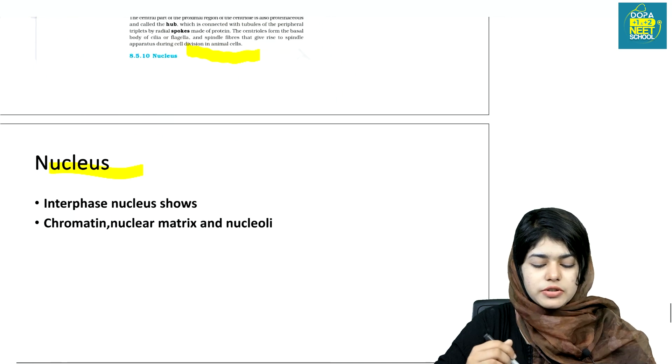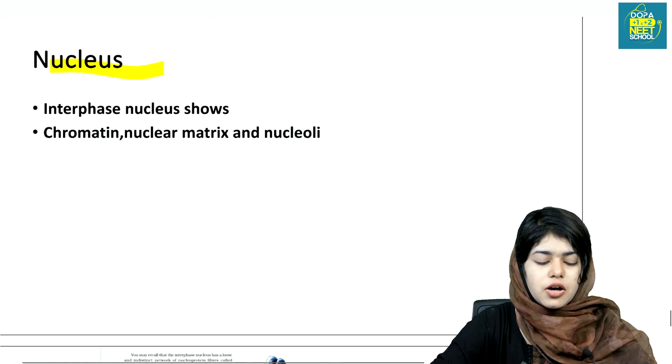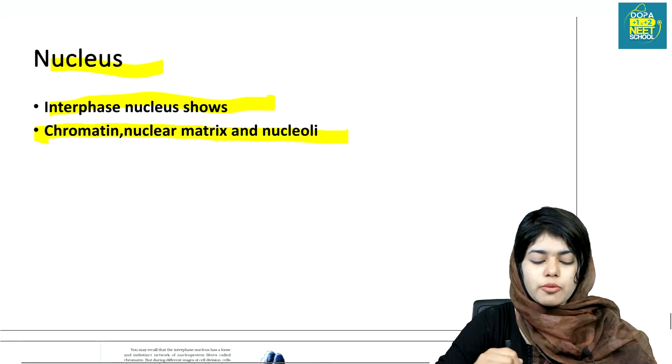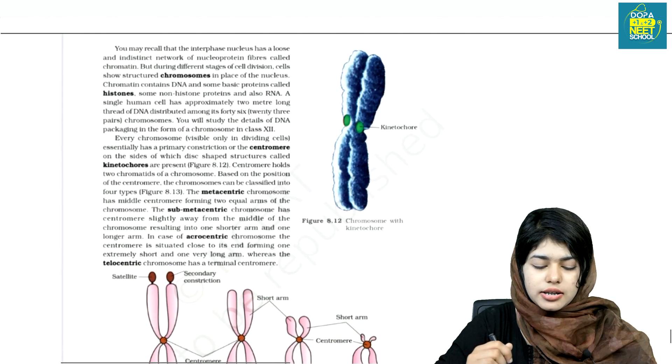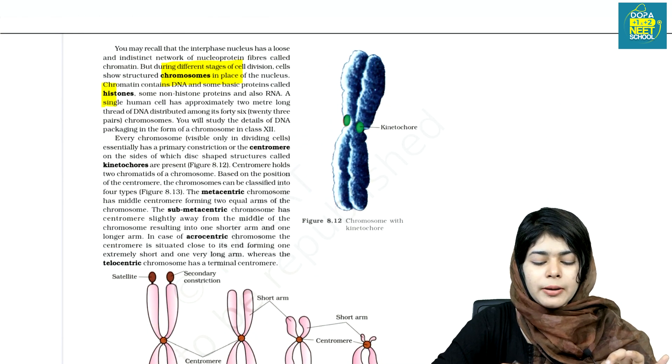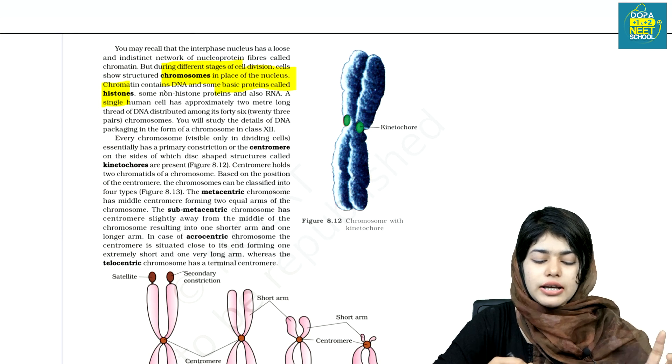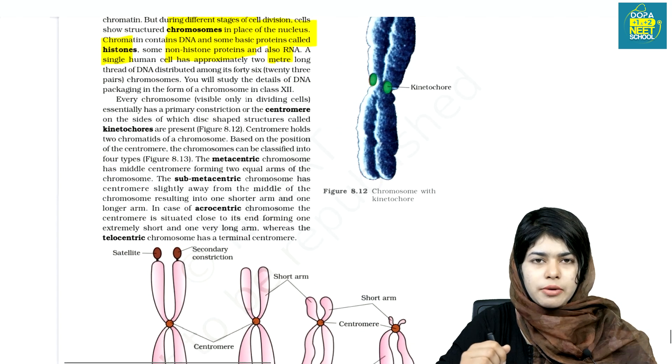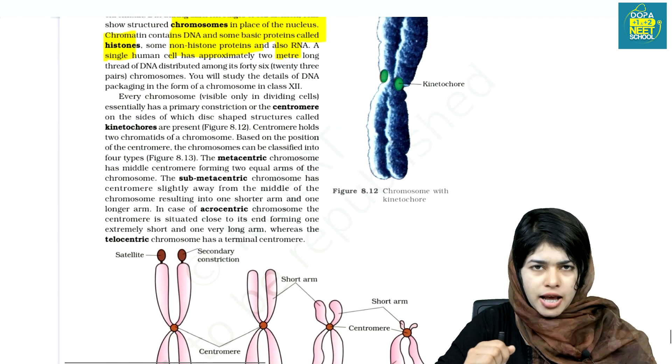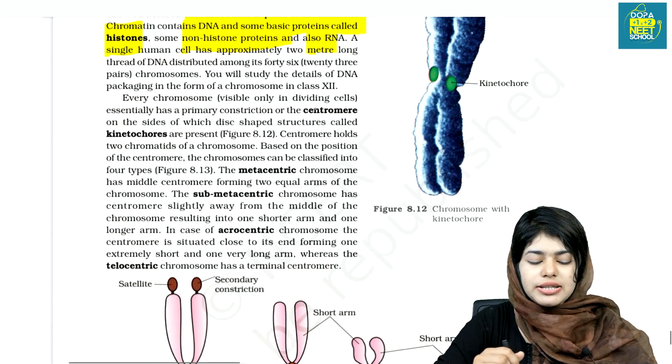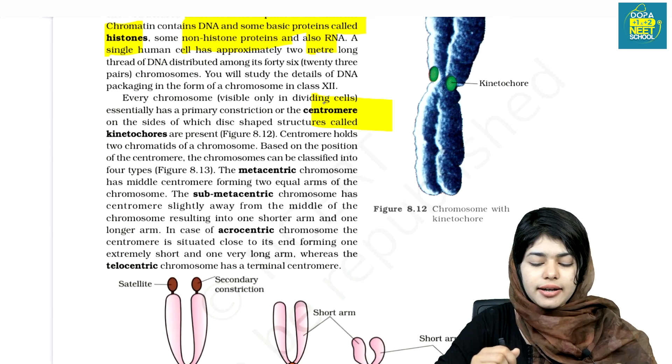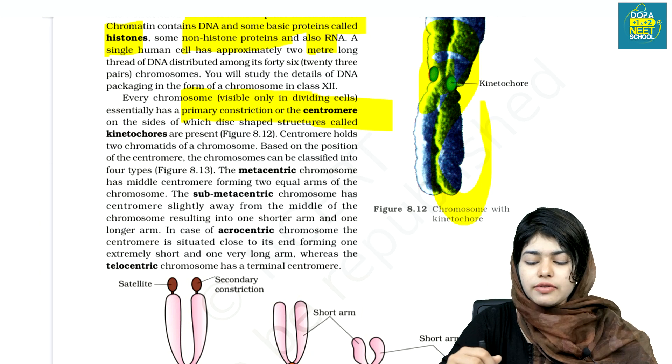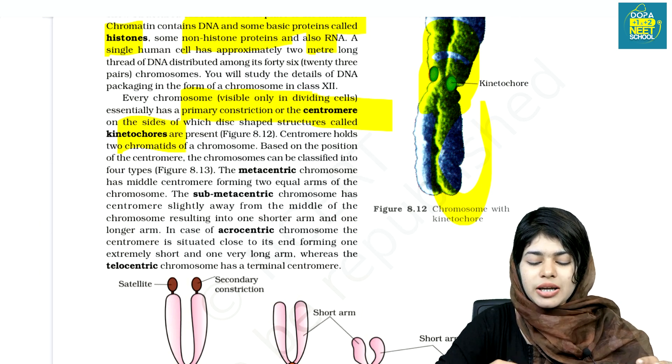The nucleus is very important. Interphase nucleus contains chromatin. Centromeres are called primary constriction. There are chromosomes with histones, which are basic proteins, and non-histone proteins. The nucleus has nuclear membrane, nuclear pore, and nucleoplasm.